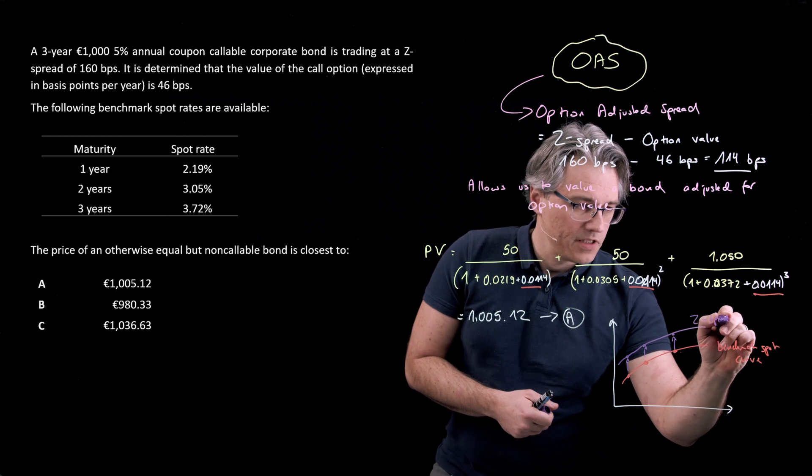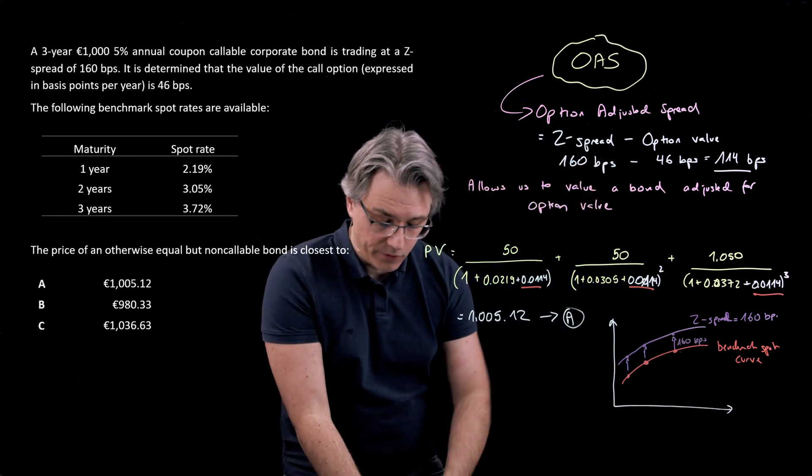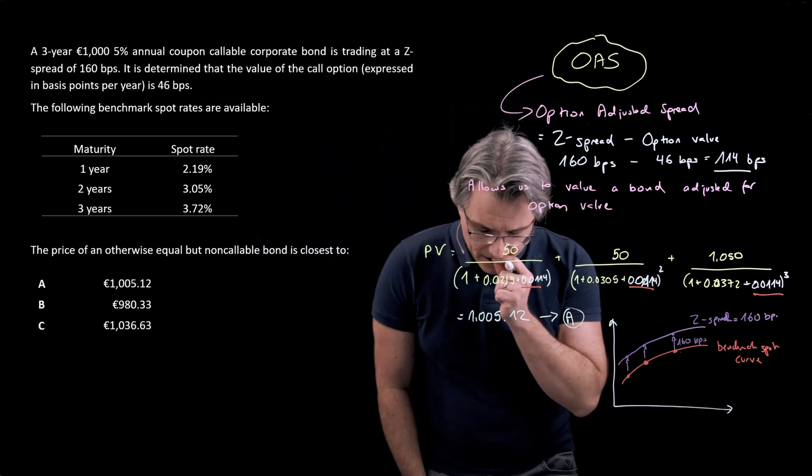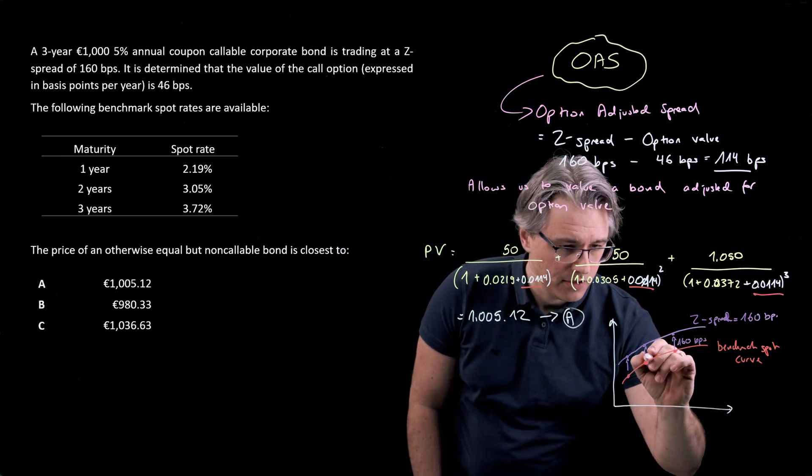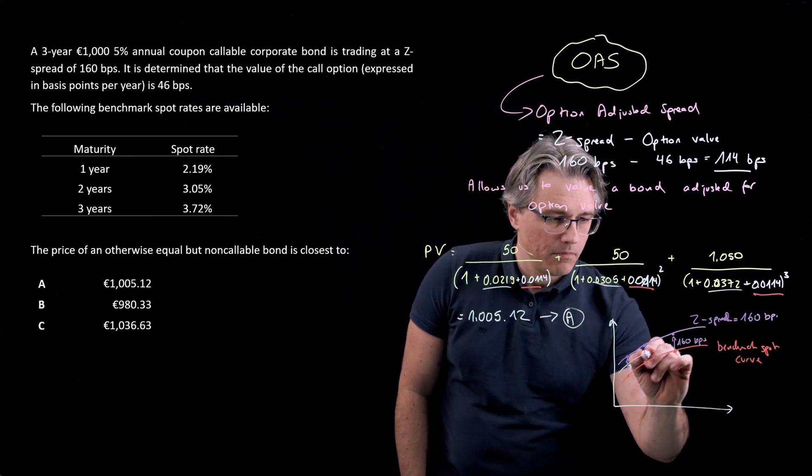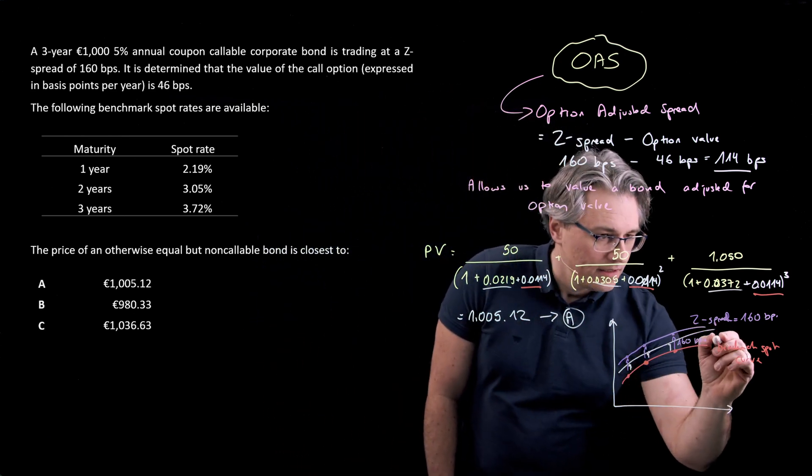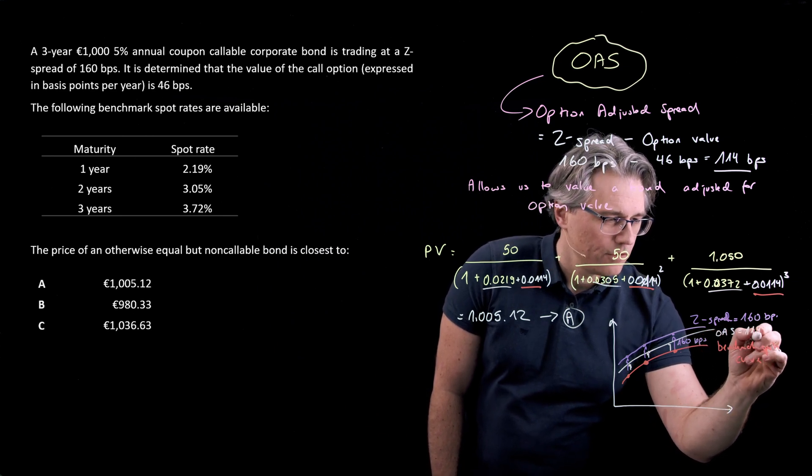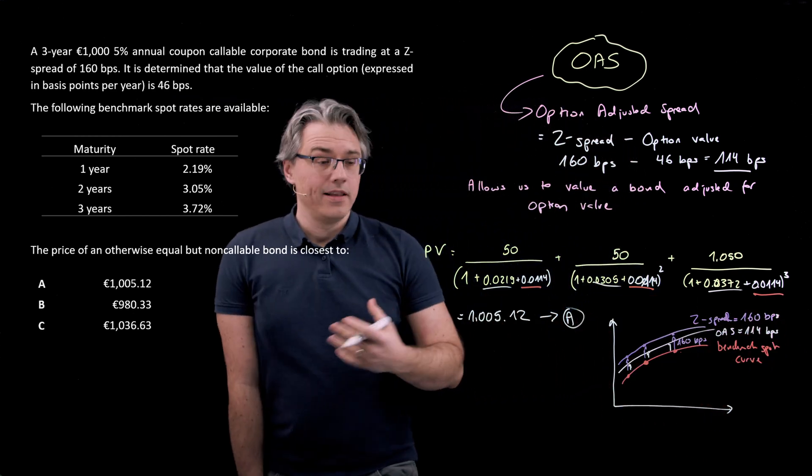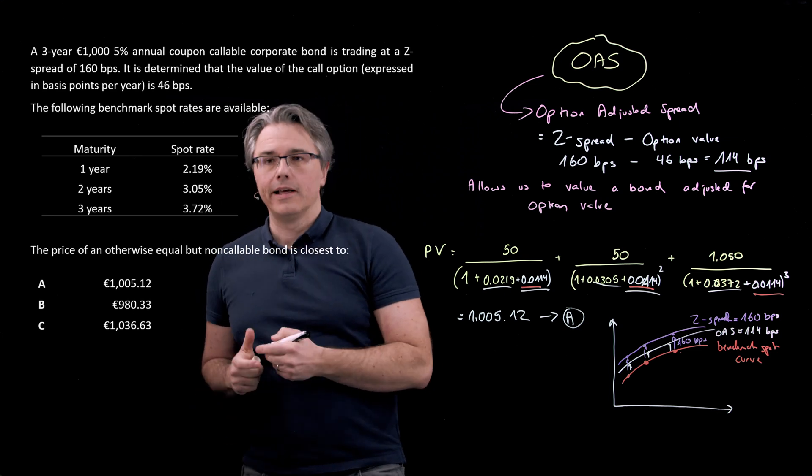But for callable bonds or bonds with built-in option features, you're also going to have an OAS. An OAS, in this case, is going to be slightly smaller because it's also an amount that you need to add to whatever is the benchmark spot rate, but it's not as severe as the Z-spread. In this case, the OAS was just 114 basis points. This produces for us a value or allows us to produce a value for an option-free or option-adjusted security.